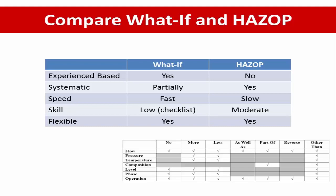Regarding skill: when What-If is combined with a checklist, the questions are very easy, so much skill is not required — unlike HAZOP. The person in the HAZOP meeting requires a moderate level of skill to complete the review. Regarding flexibility, both are flexible and can be used at any stage of the project life.